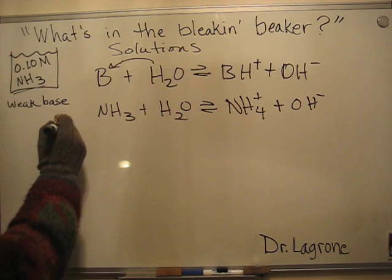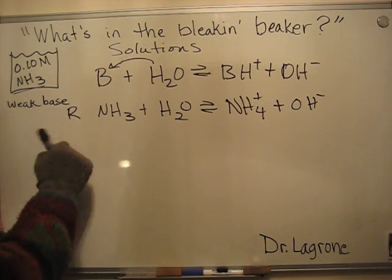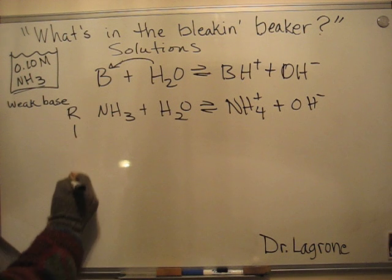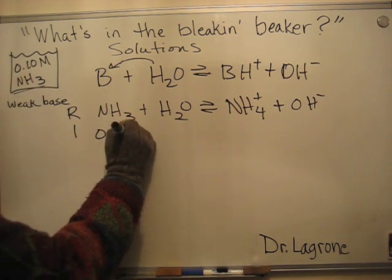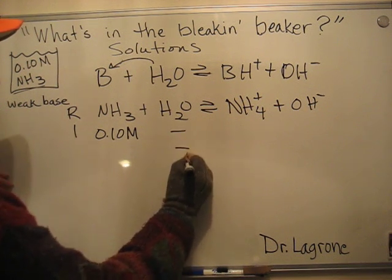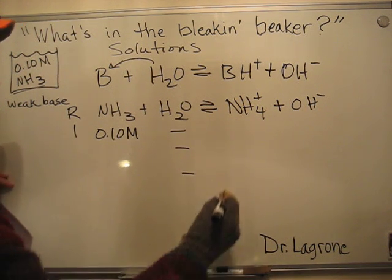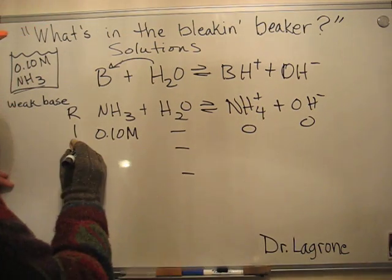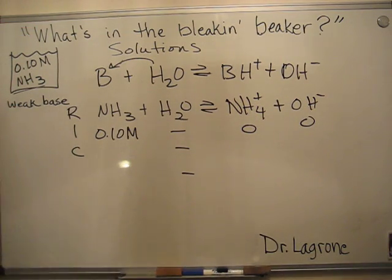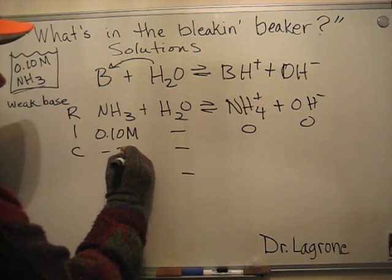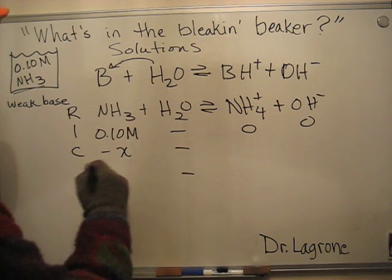Then you set up your RICE table. R is the balanced equilibrium, I is the initial concentration of the ammonia. Water is a pure liquid, so we don't include it. You didn't have any of these ions initially present, so they're zero.